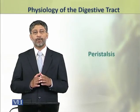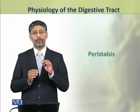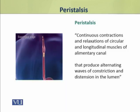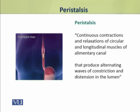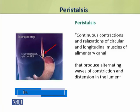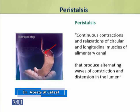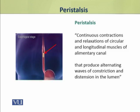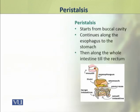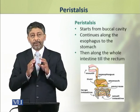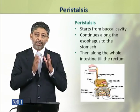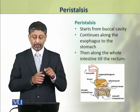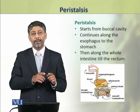Dear students, in this topic we shall discuss the process of peristalsis in detail. Peristalsis involves the continuous contractions and relaxations of circular and longitudinal muscles of the alimentary canal, which produce alternating waves of constriction and distension in the lumen. Peristalsis starts from the buccal cavity and continues along the length of the esophagus to the stomach and then along the whole of the intestine till the rectum.